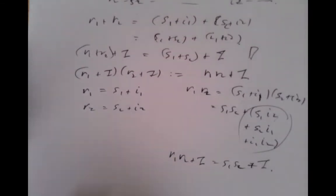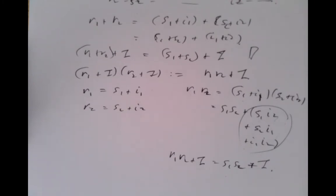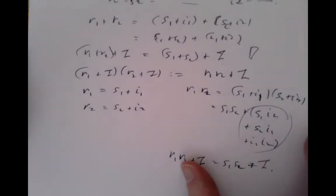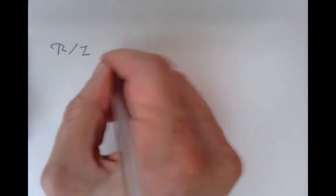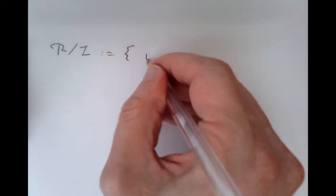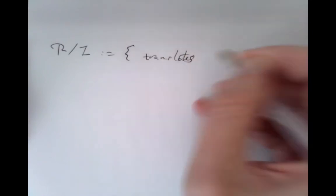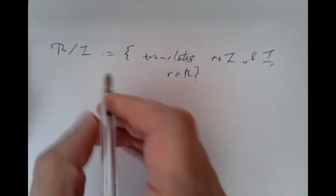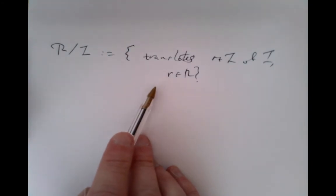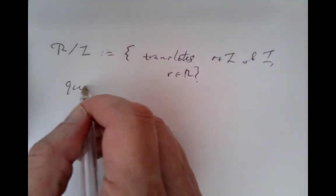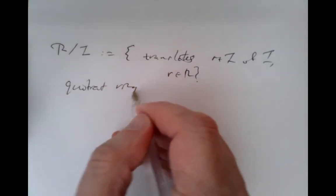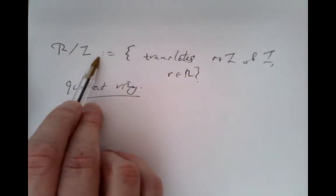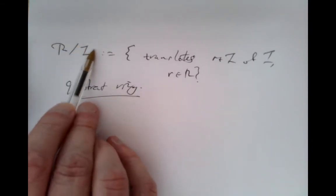Subtraction is also defined by the same steps as addition. This gives us the definition of the quotient ring: we define R mod I to be the set of all translates r plus I for r in R, with addition and multiplication defined in this way. This is called the quotient ring. We used the fact that I was an ideal to ensure this really is a ring.